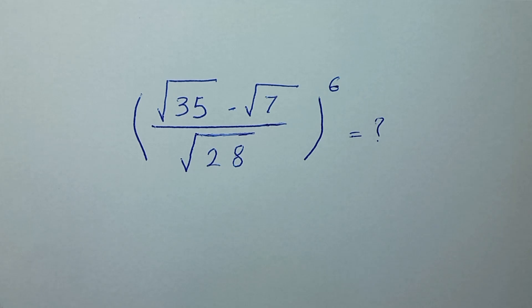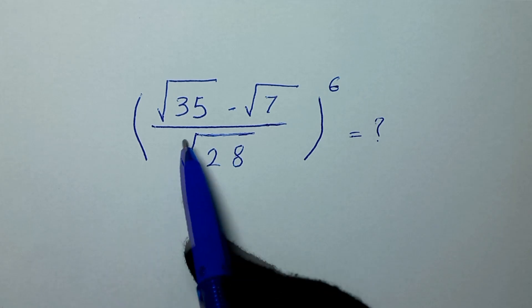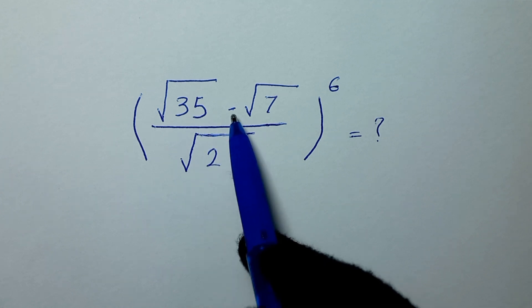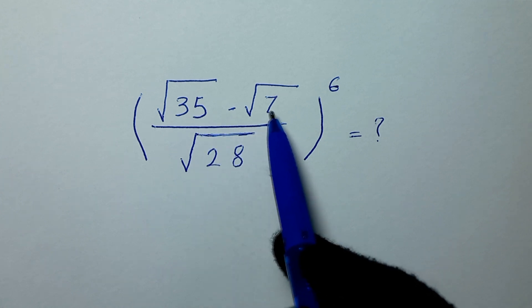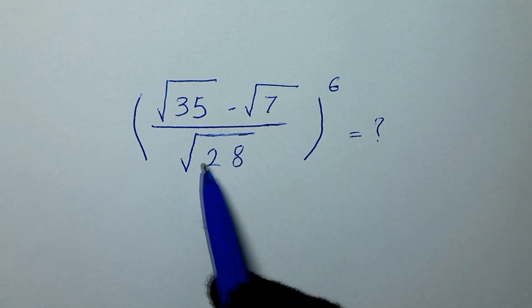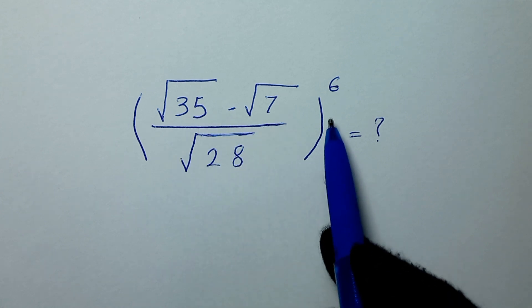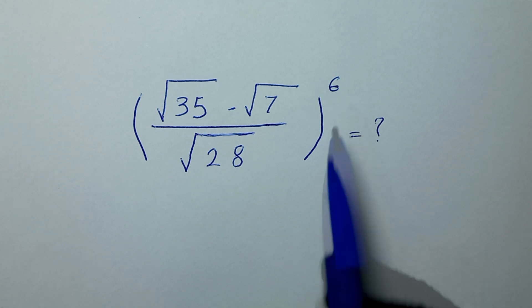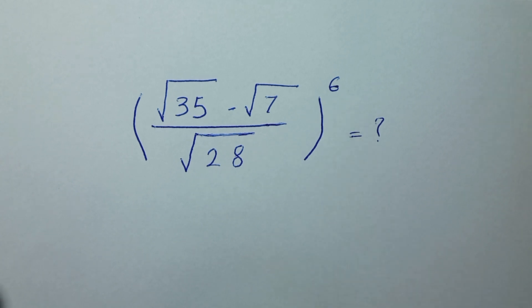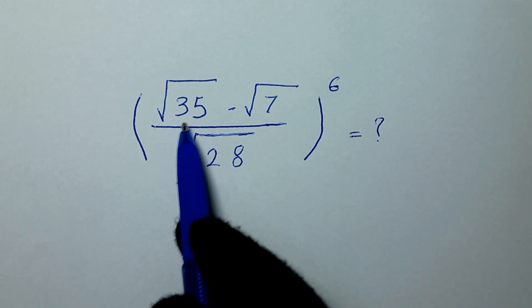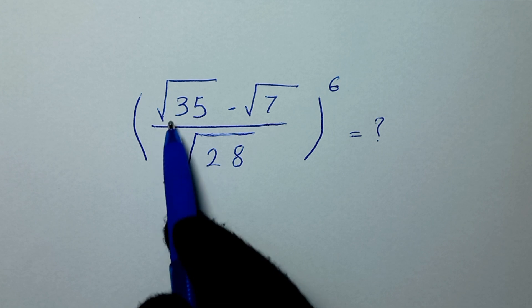Hello my friends, you're welcome to solve this math problem, which is: the square root of 35 minus square root of 7, over square root of 28, to the power of 6.